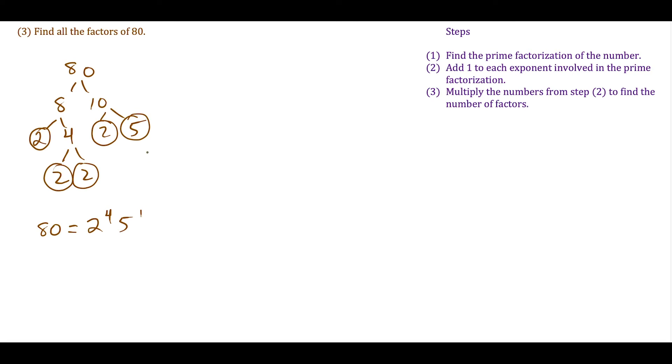To count the number of factors of 80, we use the trick. We focus on the exponents—we have an exponent of 4 and an exponent of 1. We add 1 to each: 4 plus 1 times 1 plus 1. When we work this out, 5 times 2 equals 10. This tells us that 80 has 10 factors.